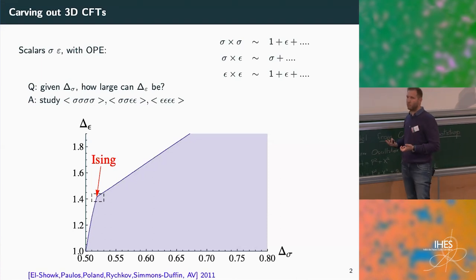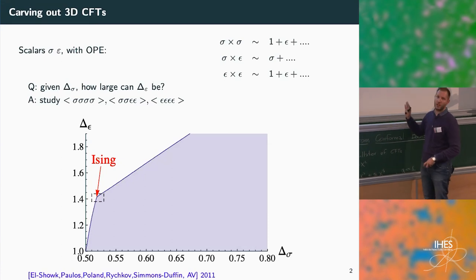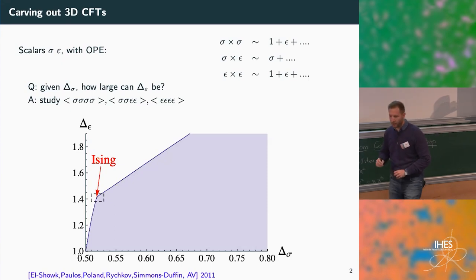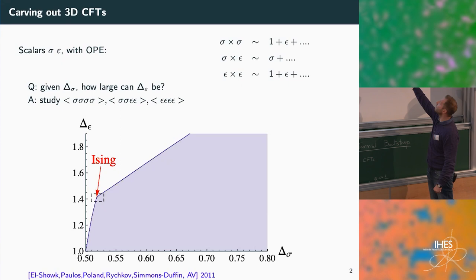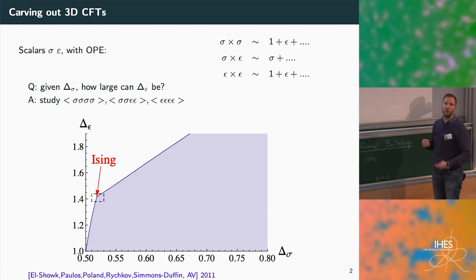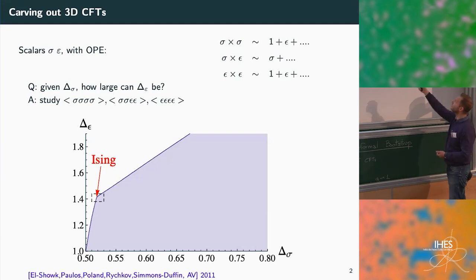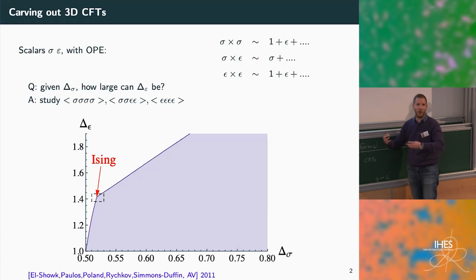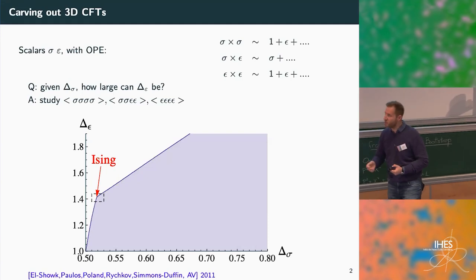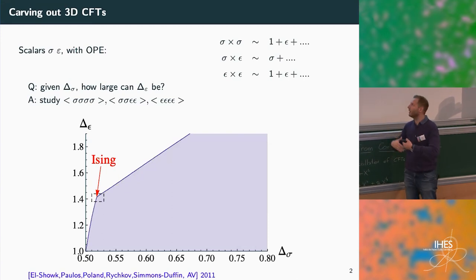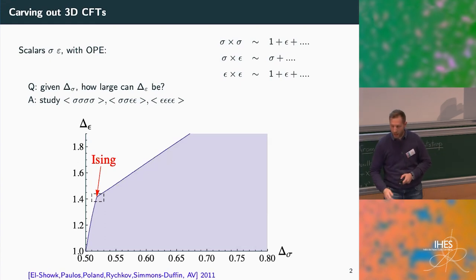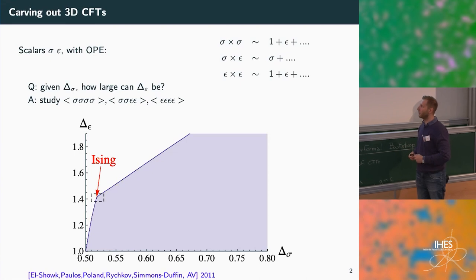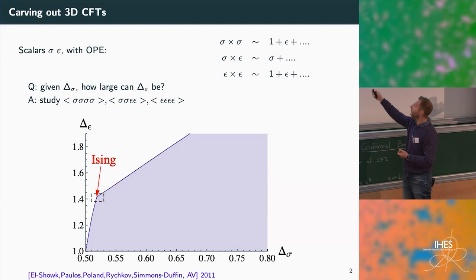We know various things about the Ising model — for example, how many relevant deformations it has. We can impose that epsilon is the only relevant operator in this OPE, corresponding to the temperature deformation as the only Z2-even deformation, while sigma is the only Z2-odd deformation corresponding to the magnetic field. Imposing this restricts the allowed operators, making the functional easier to find and the constraints stronger.